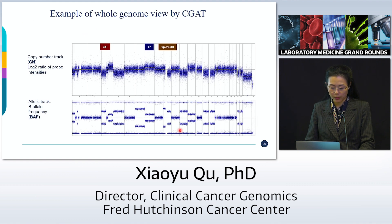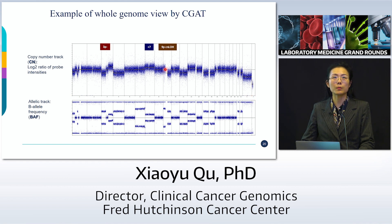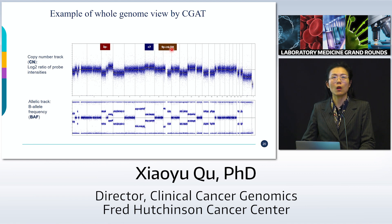Looking at the CGAT output: the whole genome plot aligns all chromosomes 1 through 22, X and Y. The copy number track on top uses blue dots and a yellow line — if around zero, it means normal. The bottom allelic track shows B-allele frequency; normally three clear tracks are visible: top, middle, and bottom. Examples shown include a deletion in 3P, a gain on chromosome 7, and copy-neutral loss of heterozygosity on the short arm of chromosome 9, where copy number is not deleted but the allelic track is altered.